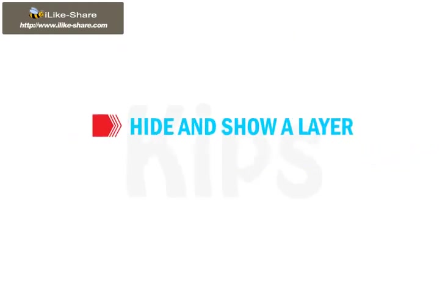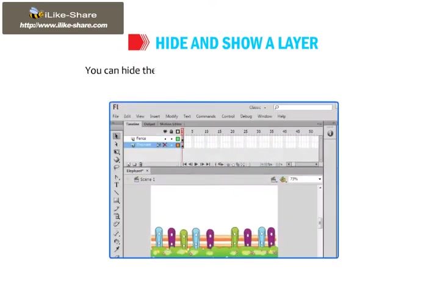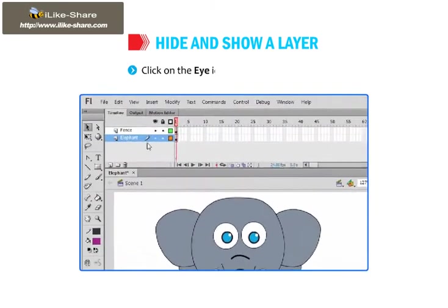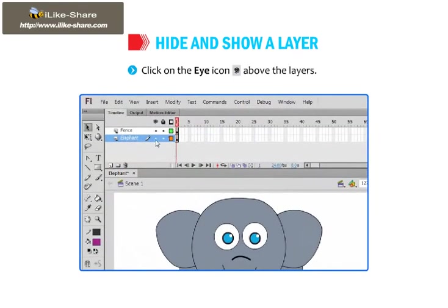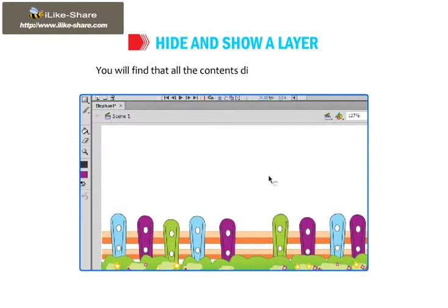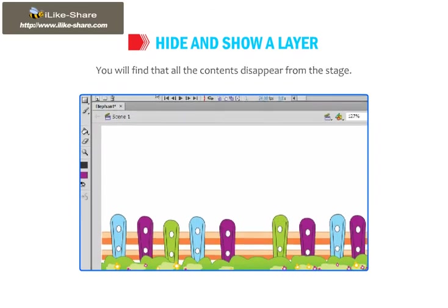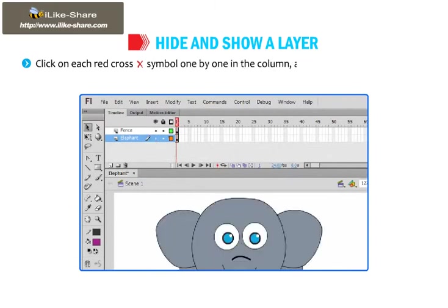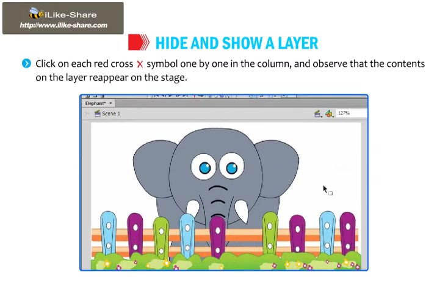Let's understand how to hide and show a layer. You can hide the layers to view the contents of the other layers. You have the option to hide all the layers at once or hide them individually. Click on the eye icon above the layers; a red cross symbol appears in the eye column and all contents disappear from the stage. Click on each red cross symbol one by one to make the contents reappear on the stage.